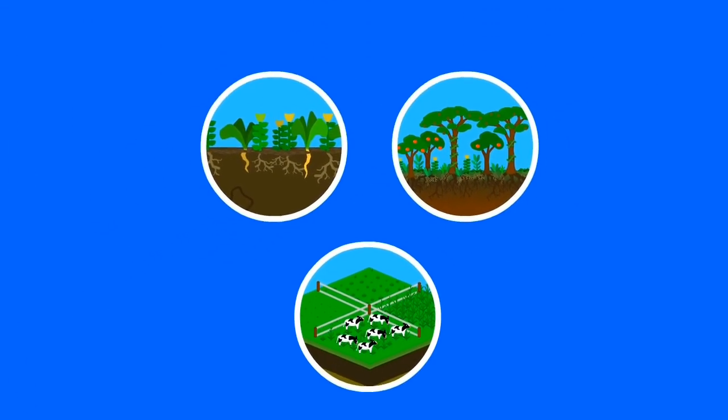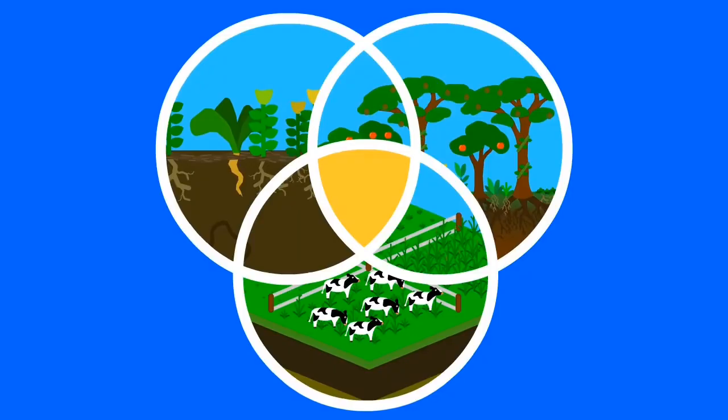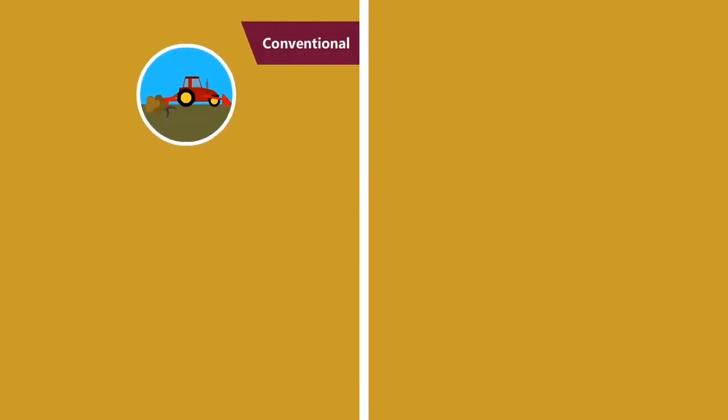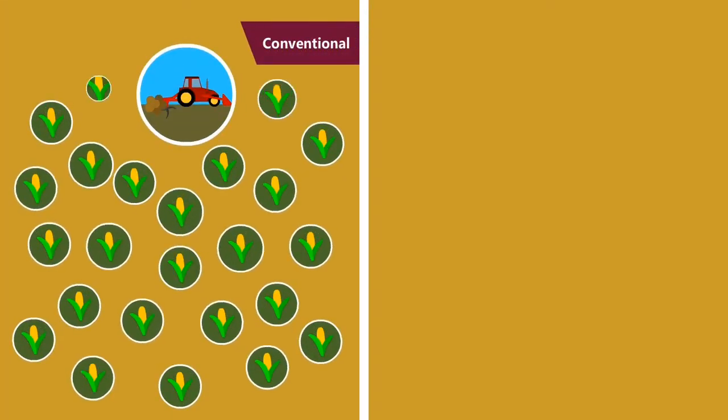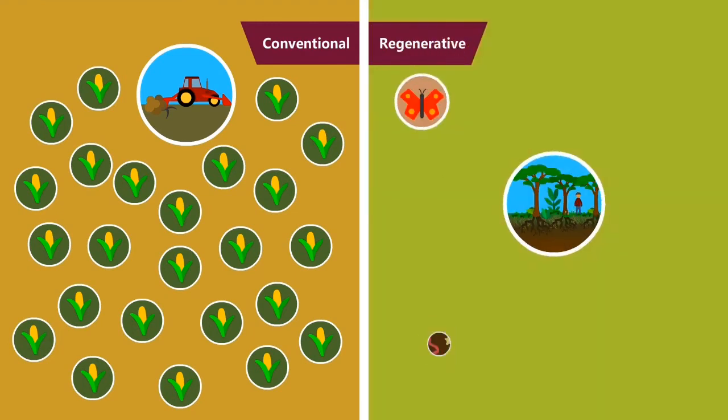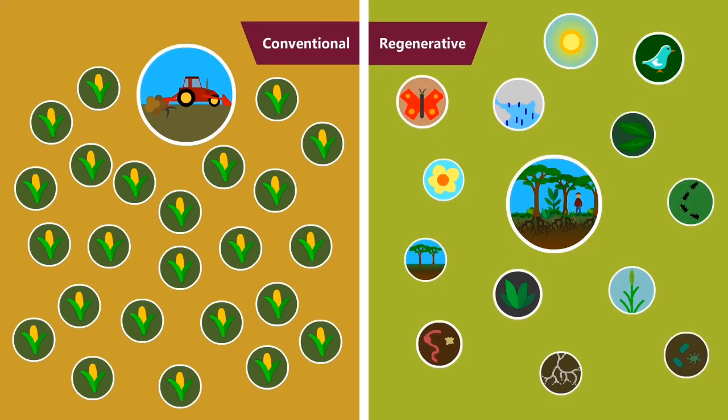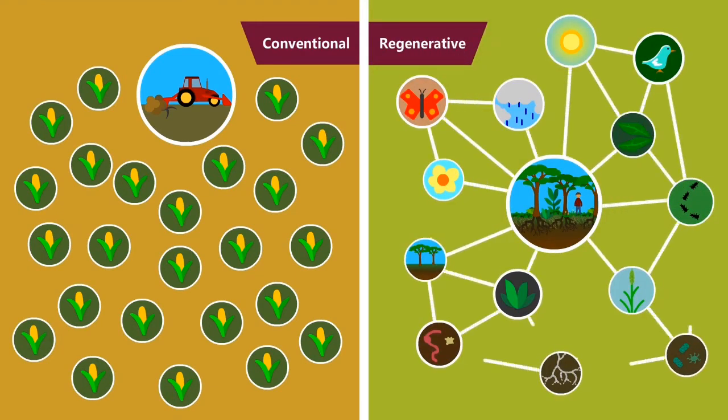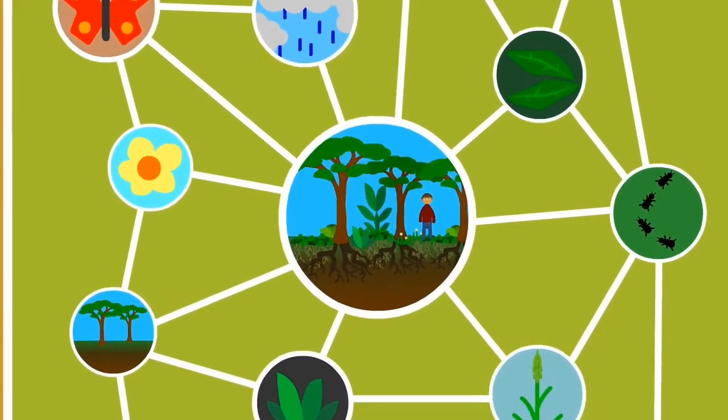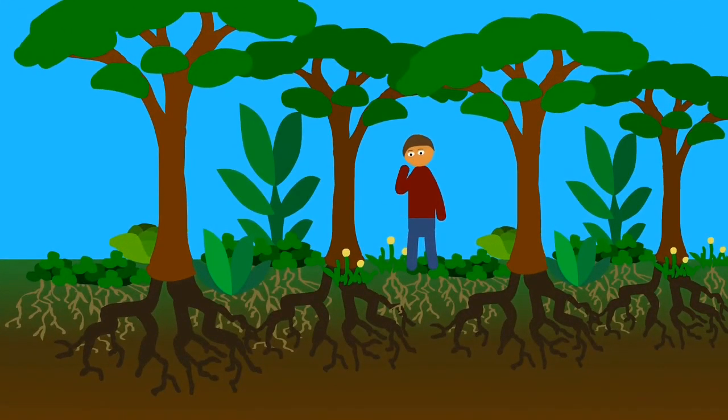These three examples of regenerative agriculture, plus all the rest of them, all have something in common. Whereas in conventional agriculture you seek to create as many of one thing as possible, in regenerative agriculture you seek to create as many relationships between things as possible. You are one of those things. What sort of relationship with the land do you want to foster?